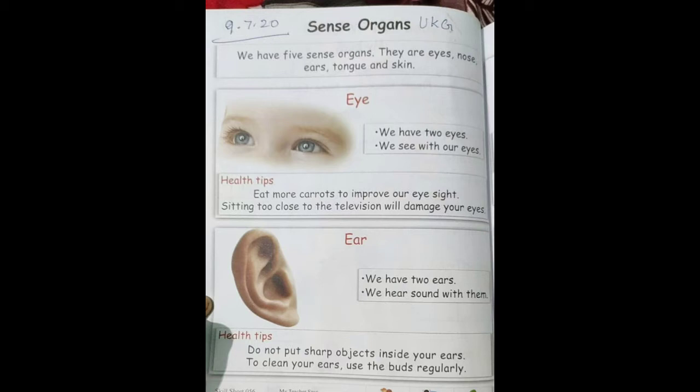We have five sense organs. They are eyes, nose, ears, tongue, and skin.